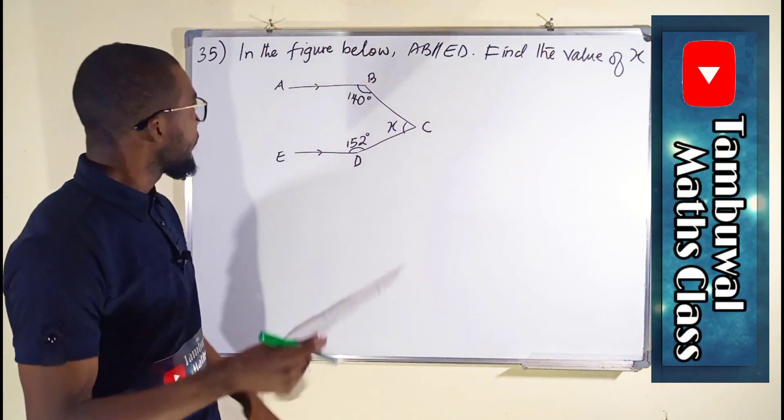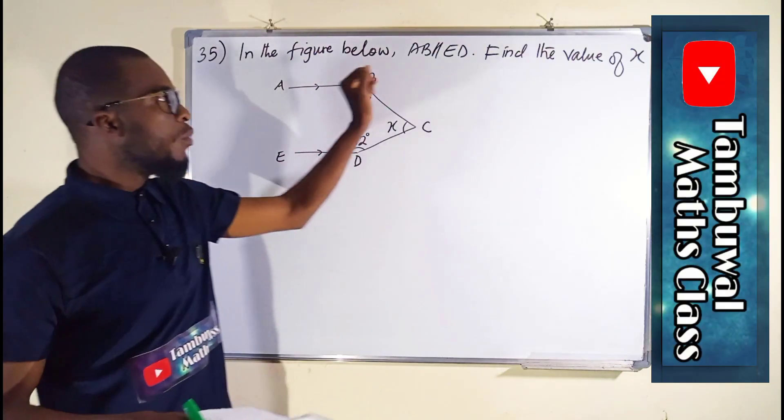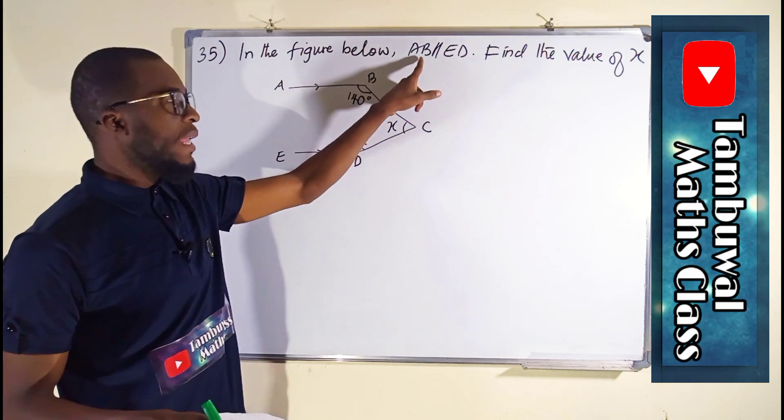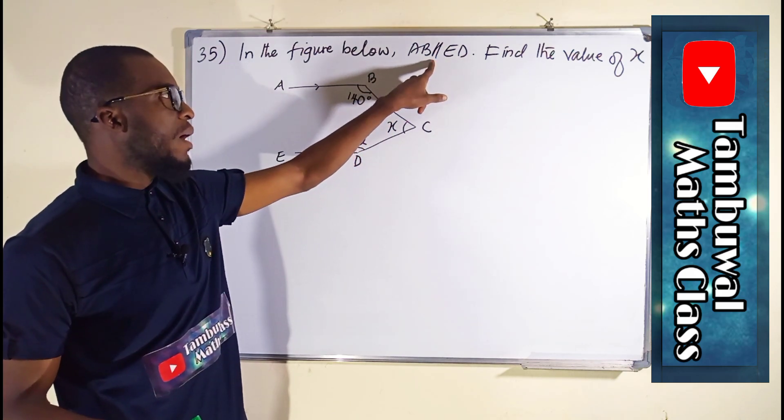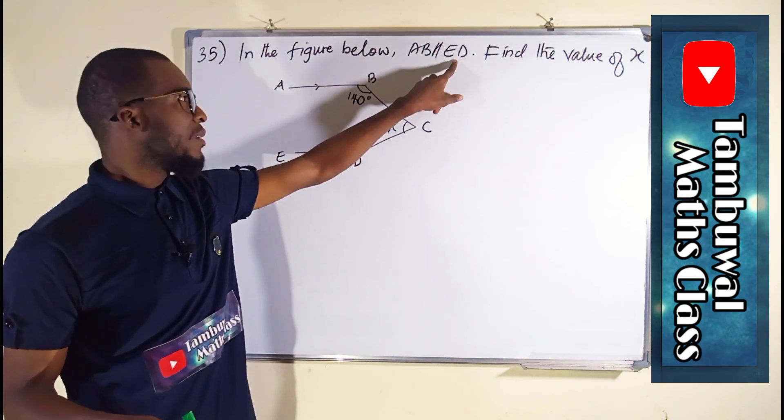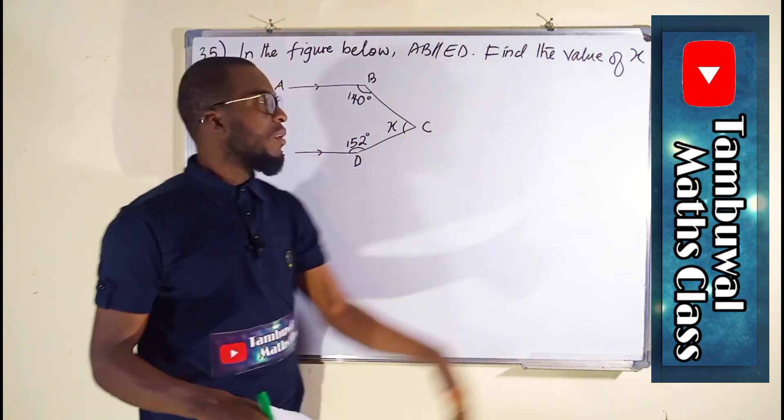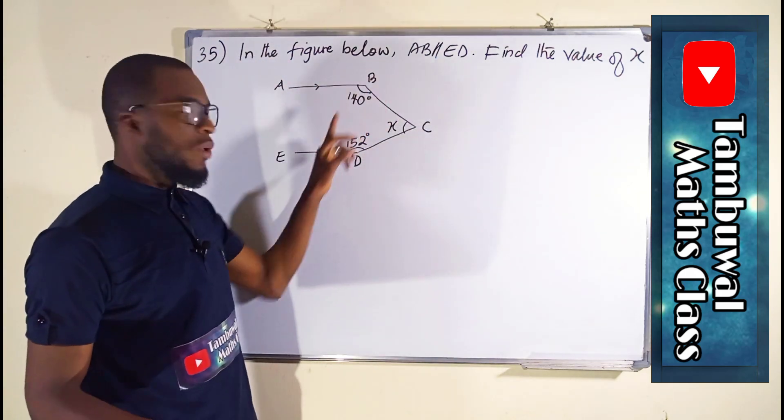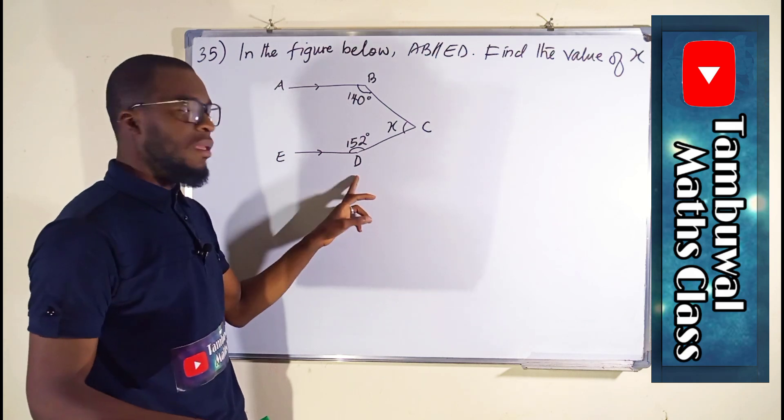Question number 35. In the figure below, line AB is parallel to line ED. We are asked to find the value of X. We have line AB and we have line ED.